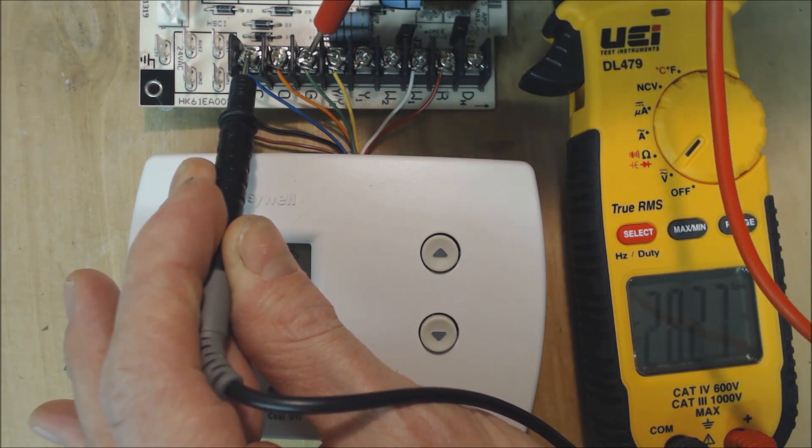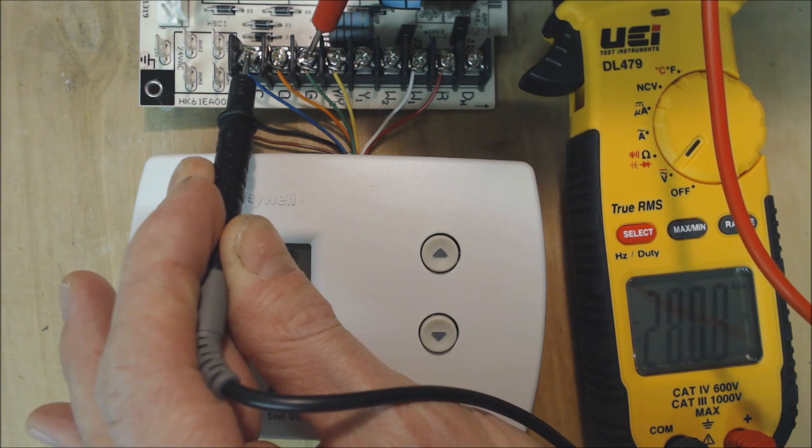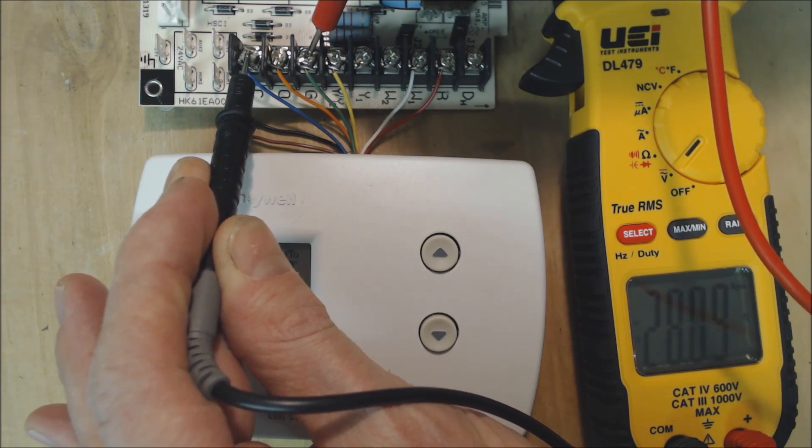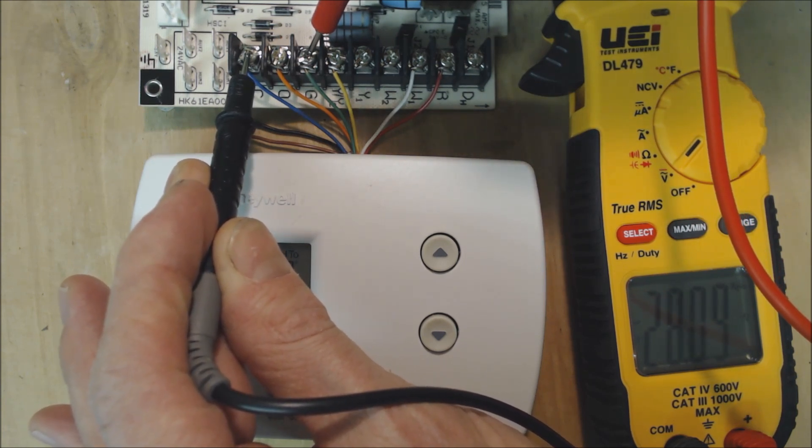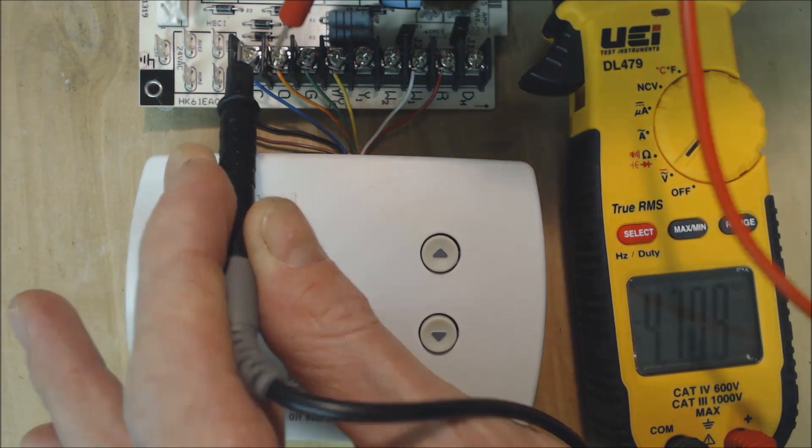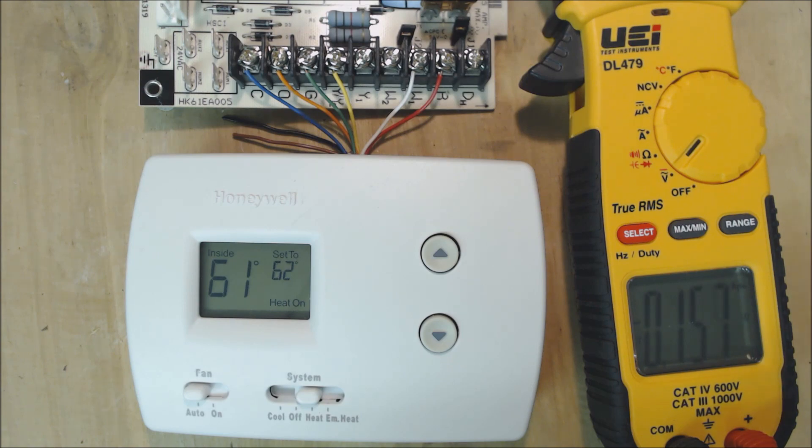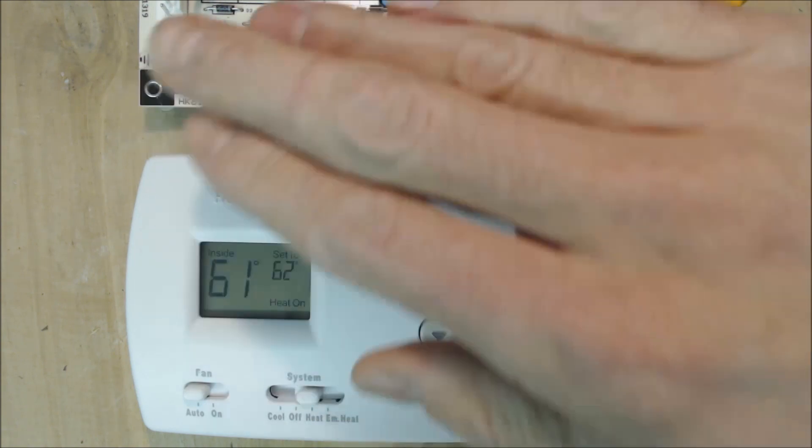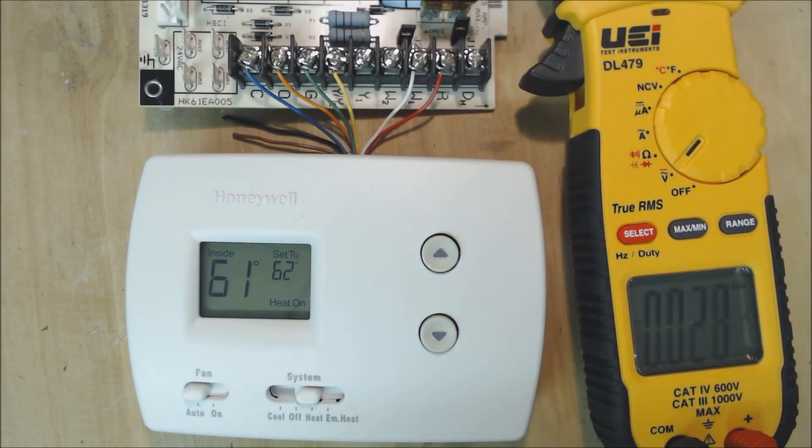Also, if we put our probe on G, we got 28 volts. We are presently calling for heat and that is correct. We should not have any voltage on the O right now. That means we don't have our 24 volts on the O, and that is correct. The thermostat is sending voltage correctly to the indoor control board.